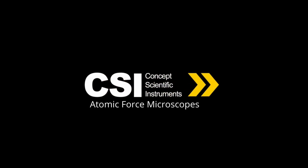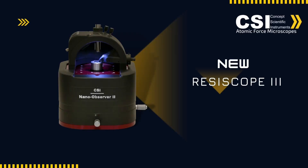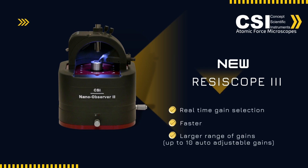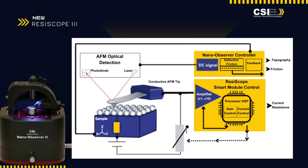Introducing the new Resoscope on the NanoObserver 2, a superior system for advanced electrical characterization. This feature stands out with its active gain selection and integrated current limiter, ensuring unmatched precision and protection.